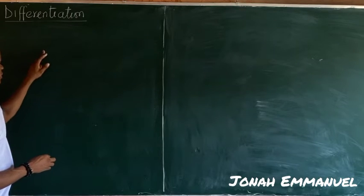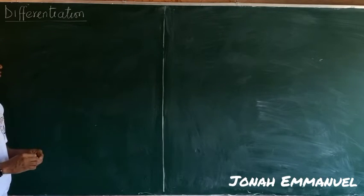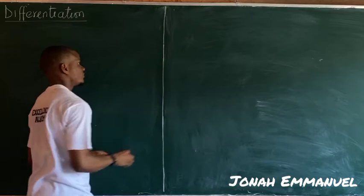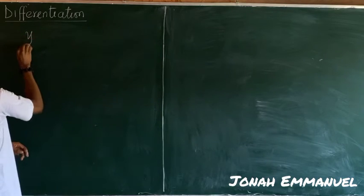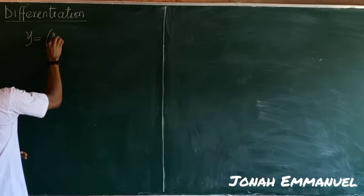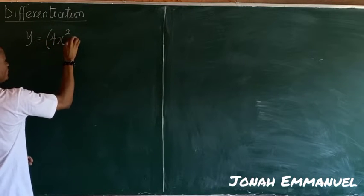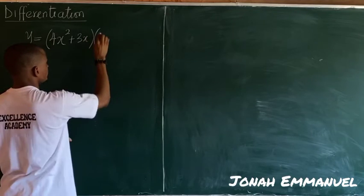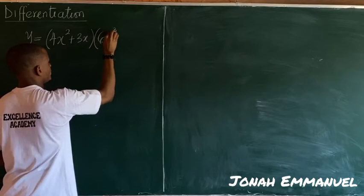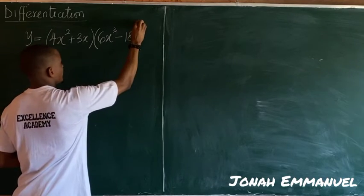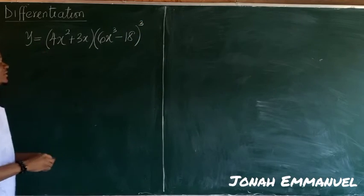Hello, let's look at the second example on differentiation using product rule. So let's say I have that y is equal to 4x squared plus 3x, multiplying 6x cubed minus 18, let's take the power 3 for instance.